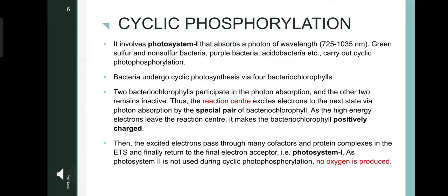Then, the excited electrons pass through many cofactors and protein complexes in the ETS and finally return to the final electron acceptor, i.e. photosystem 1. As photosystem 2 is not used during cyclic phosphorylation, no oxygen is produced.